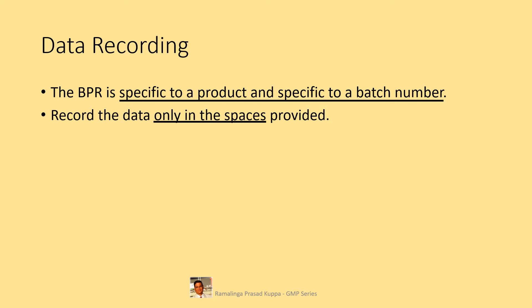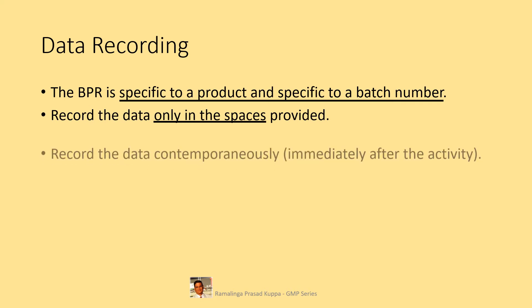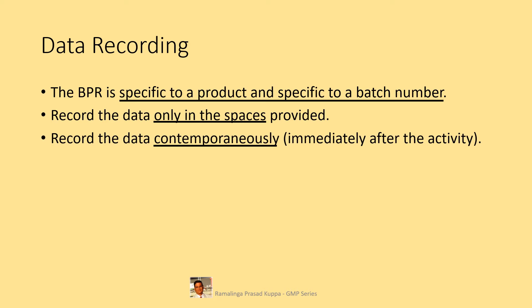Record data only in the spaces provided. Record time in the space provided for time from and to. Record the quantity charged in the specified column — if the unit of measure is already reflected in the column, you don't have to write it separately. Sign in the doer column for who performs the job, and sign in the checked-by column for who witnesses the activity. Record the data contemporaneously, immediately after the activity — this reflects the integrity of being contemporaneous.